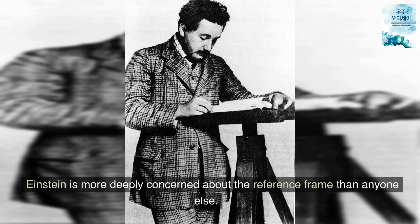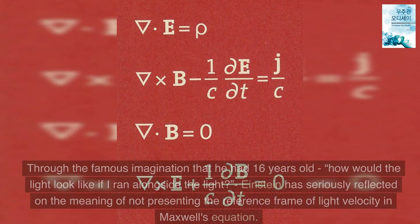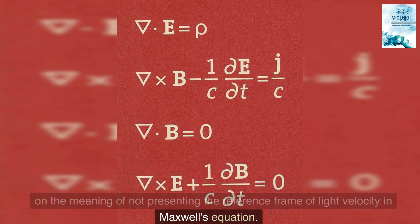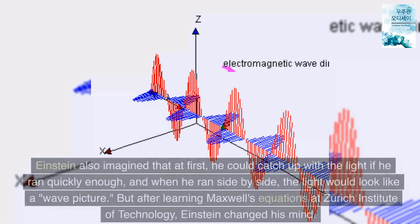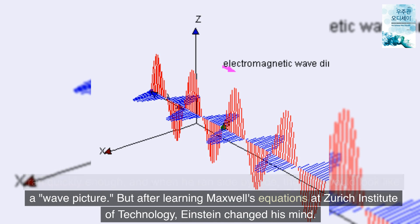Einstein is more deeply concerned about the reference frame than anyone else. Through the famous imagination that he had at 16 years old, how would the light look like if I ran alongside the light, Einstein has seriously reflected on the meaning of not presenting the reference frame of light velocity in Maxwell's equation. Einstein also imagined that at first he could catch up with the light if he ran quickly enough, and when he ran side by side the light would look like a wave picture.